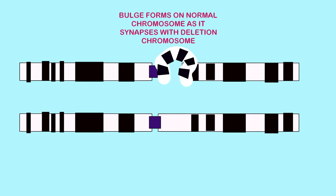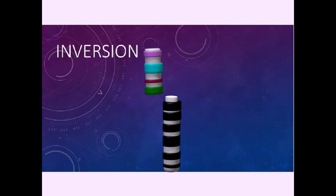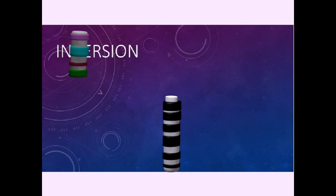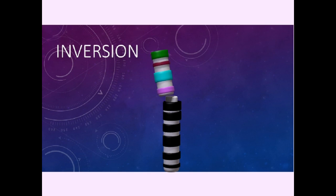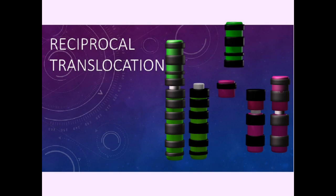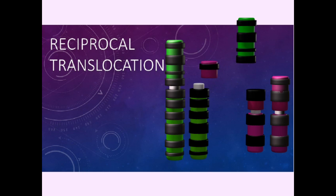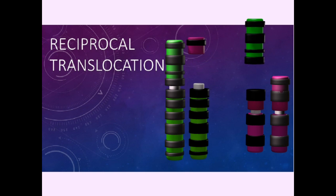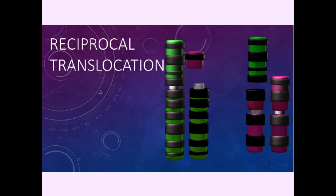And so inversions, which take chromosomal regions and reinsert them at a 180-degree angle, or translocations, which move chromosomal sections to different chromosomes — this would affect the pairing of chromosomes during meiosis.